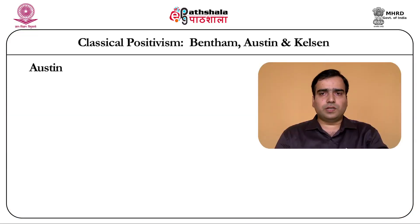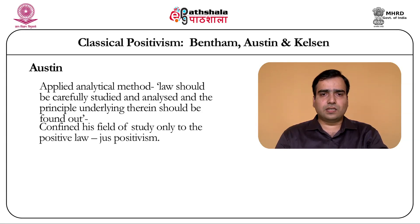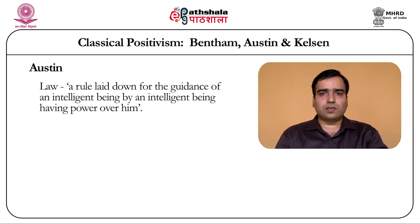Now, Austin. Austin dominated British positivism till 1945 when Bentham's work was first published. The work of Austin was largely derived from Bentham's. He applied the analytical method — law should be carefully studied and analyzed and the principles underlying therein should be found out — and he confined his study only to positive law, which he called just positivism. Austin is considered the father of English jurisprudence. His lectures were published under the title The Province of Jurisprudence Determined. He defined a law as a rule laid down for the guidance of an intelligent being by an intelligent being having power over him.